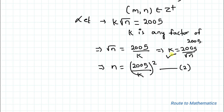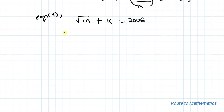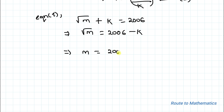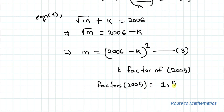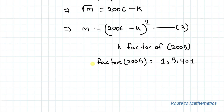Substituting the value of k into equation 1, we have √m + k = 2006, which implies √m = 2006 − k, so m = (2006 − k)² — let's call this equation 3. Now, since k is a factor of 2005, the factors of 2005 are 1, 5, and 401. These three values are our possible values of k.